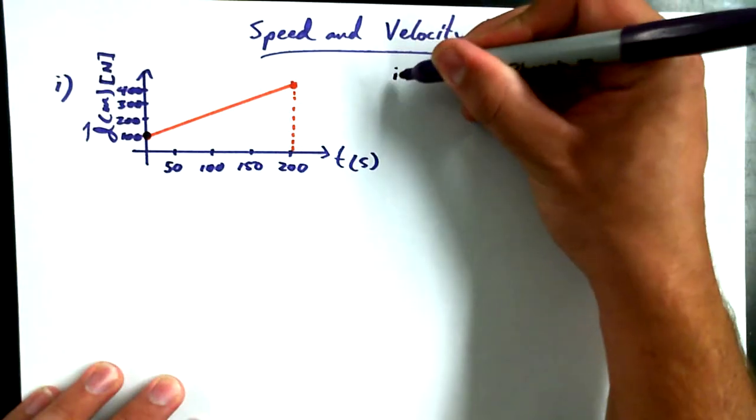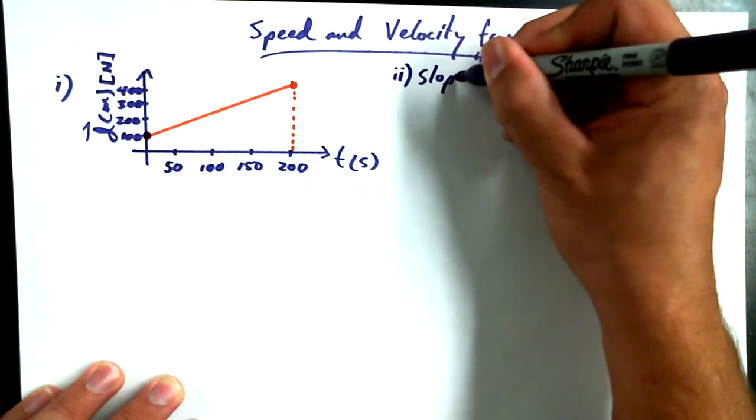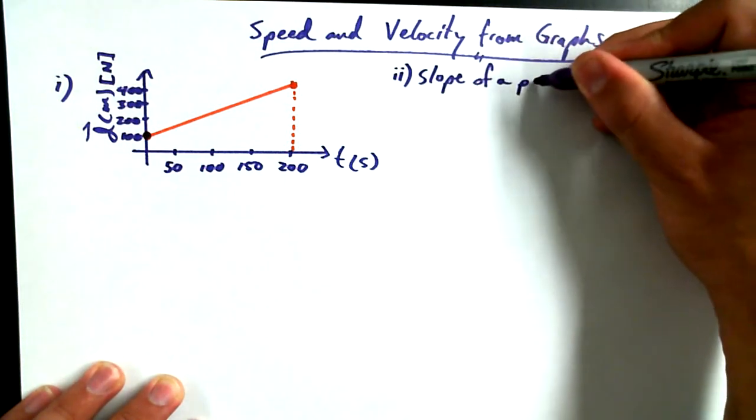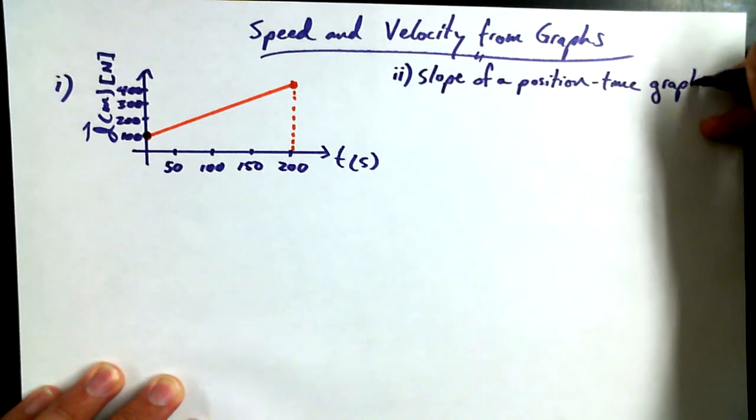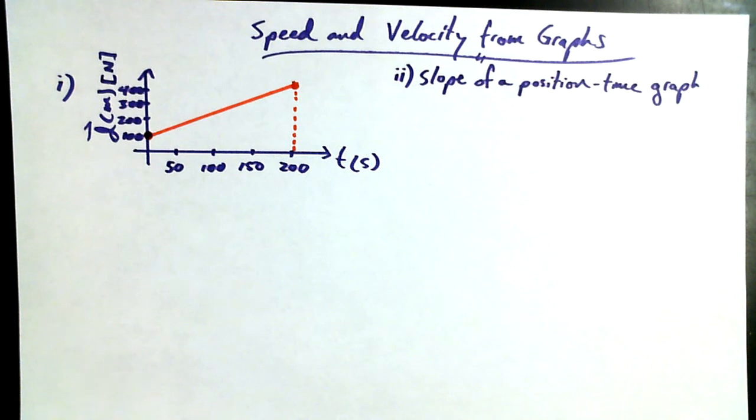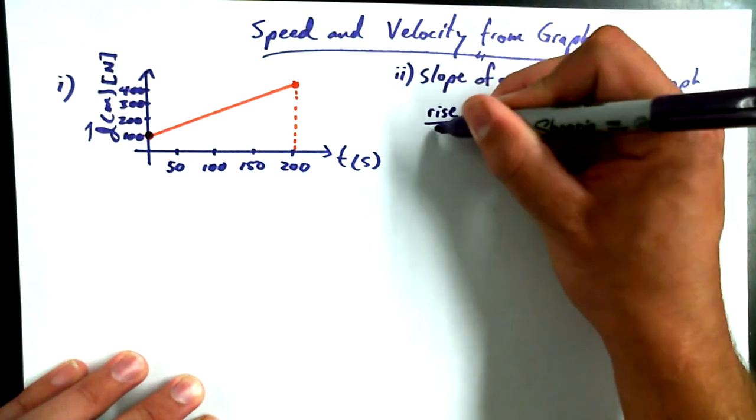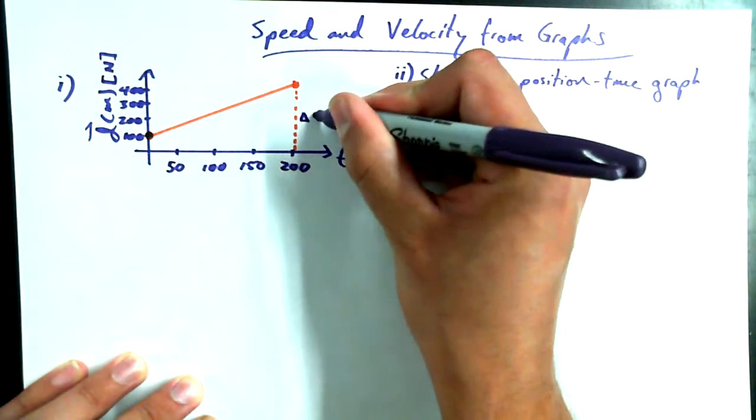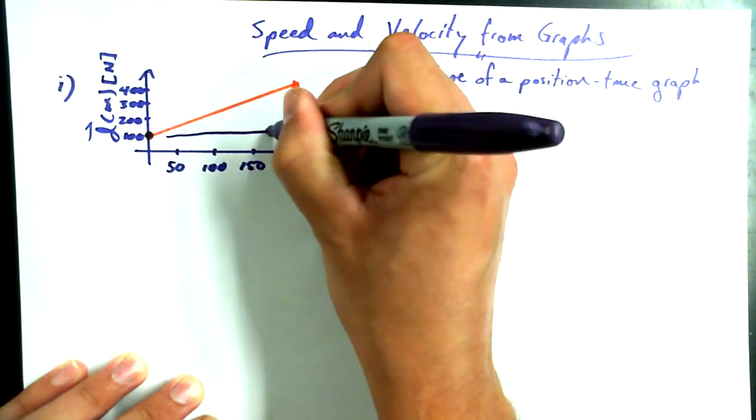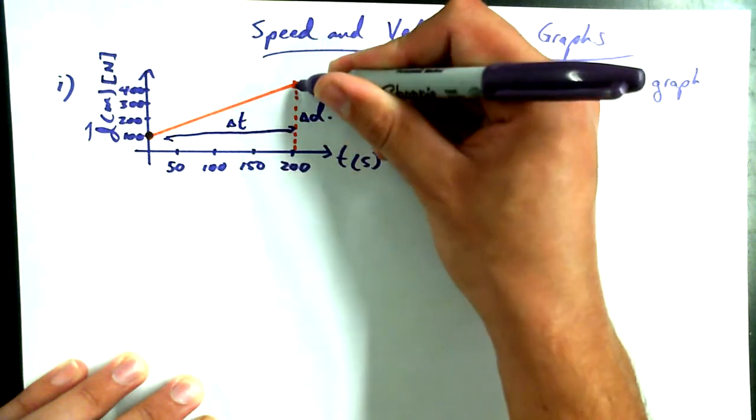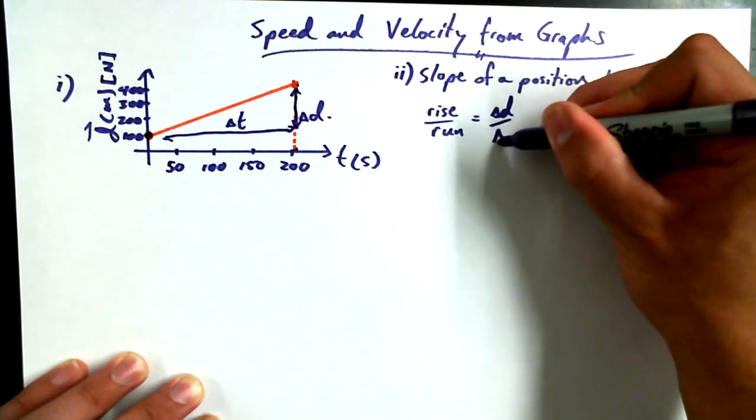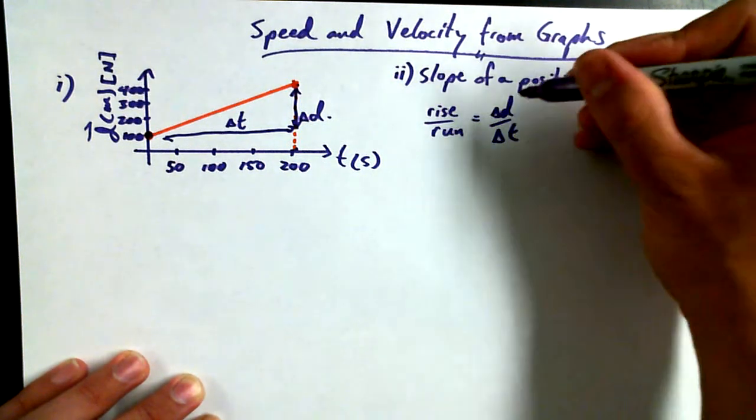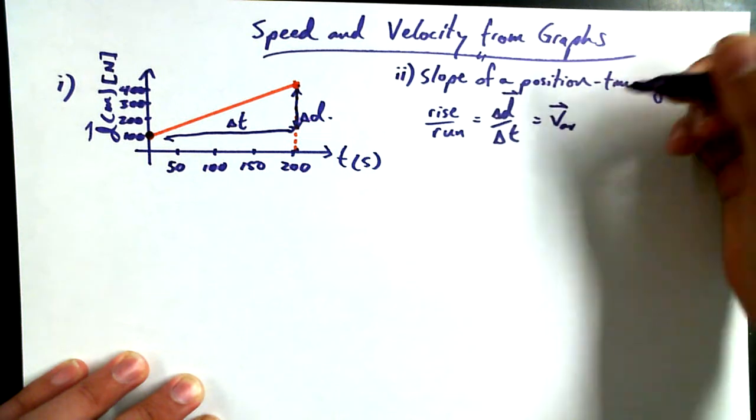The simplest analysis I can do on a graph like this is to find its slope. How do you find the slope of any graph? Rise over run. So we've got rise over run. And for a position-time graph, the rise is your delta D value, and your run is, from start to finish, your delta T value. Rise over run, delta D over delta T. And we know that delta D over delta T is the average velocity, V-Av.